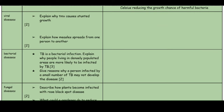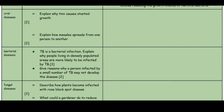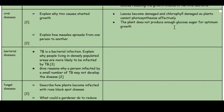Moving on to viral diseases: explain why TMV causes stunted growth. Tobacco mosaic virus damages the leaves and the chlorophyll becomes damaged, so the plants cannot photosynthesize effectively. The plants do not produce enough glucose for optimum growth — because the chlorophyll is damaged, photosynthesis cannot take place, and without glucose from photosynthesis the plant cannot grow.